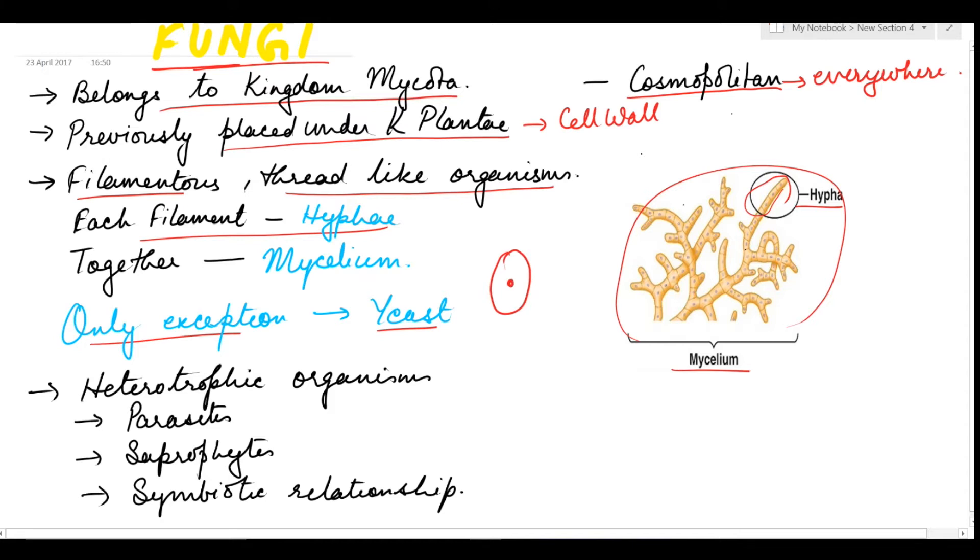Fungi have a heterotrophic mode of nutrition, meaning they are heterotrophic organisms which live as parasites or saprophytes. The surface upon which they grow is known as the substrate. Some have symbiotic relationships like lichens, where they are associated with algae, and mycorrhizae, where they are associated with roots of higher plants.